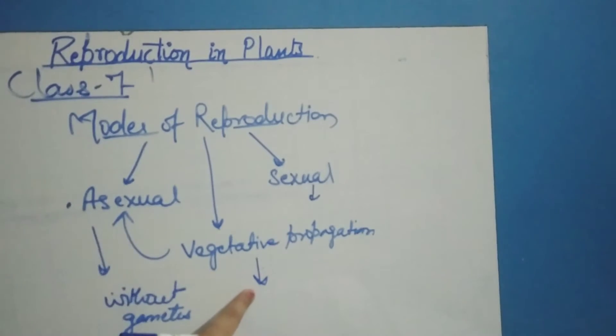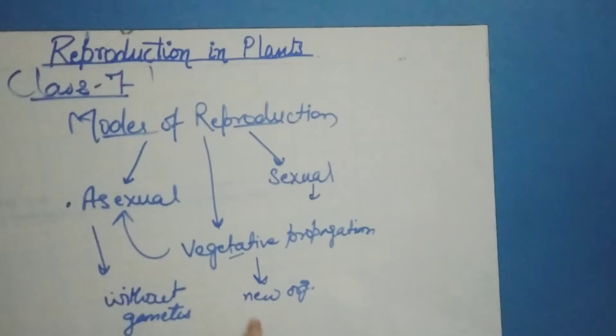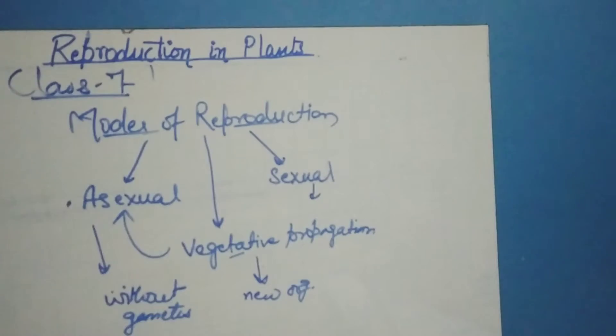If we talk about vegetative reproduction, it is also a type of asexual reproduction. But in this, a cell or tissue or part of a plant develops into a new organism. Any cell, tissue, or vegetative part like root, stem, or leaves can multiply and form a new plant.